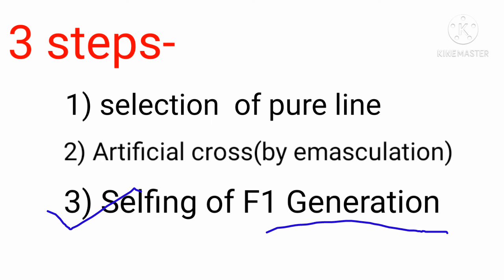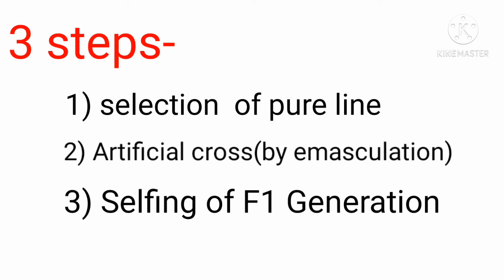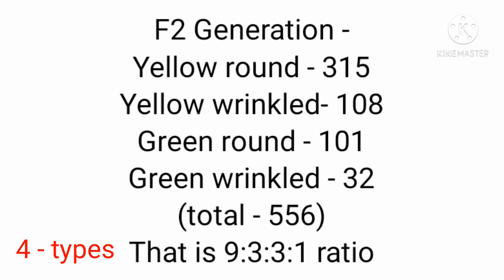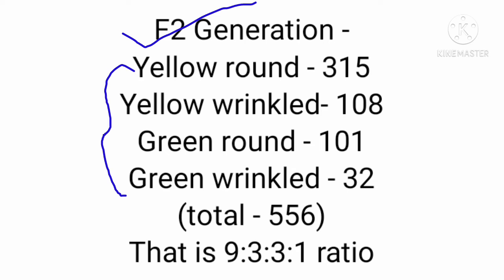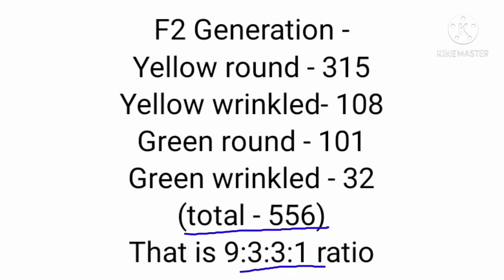The third step: he sowed the seeds, raised the F1 generation plants, and allowed selfing. When pods were formed he collected seeds of the F2 generation. He was expecting about 75% yellow round and 25% green wrinkle seeds, but he was surprised to find four types. The F2 generation showed four different phenotypes — approximately 556 total plants in a ratio of 9:3:3:1.